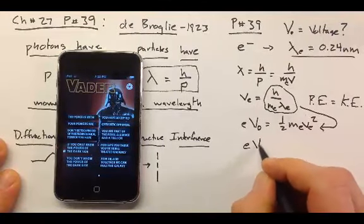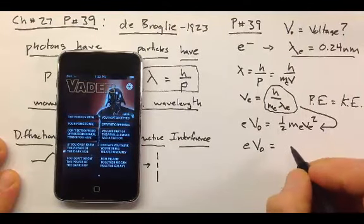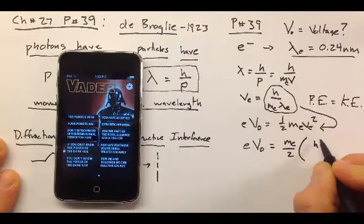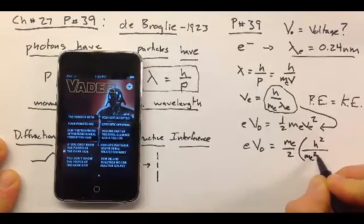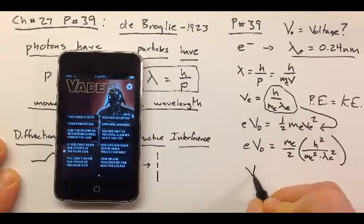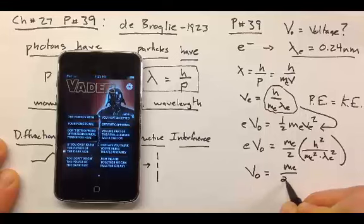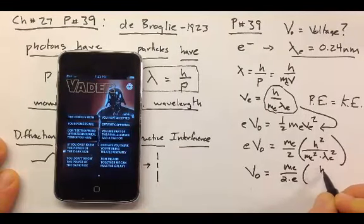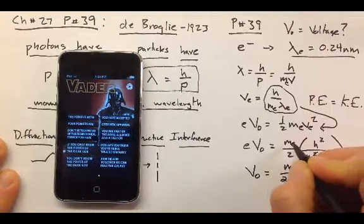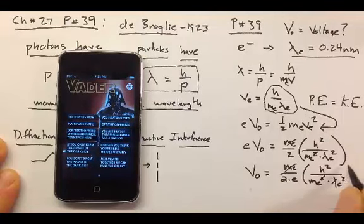And we are going to get a charge of an electron times the voltage through which it's accelerated is equal to mass of the electron divided by 2 times this whole thing squared. Planck's constant squared, mass of the electron squared, times the wavelength squared. And if we solve this expression for voltage, we would get mass of the electron divided by 2 times the charge on the electron, times Planck's constant squared, divided by the mass of the electron squared. But, I'm going to cancel this squared with this guy here. So there's a squared there, that cancels out, times the wavelength of the electron squared.